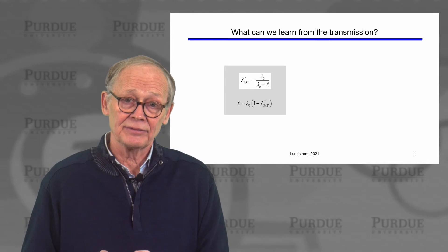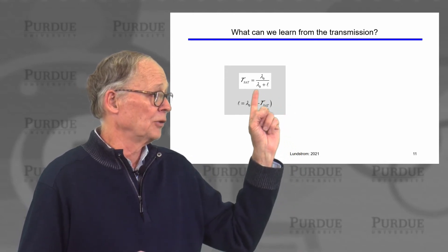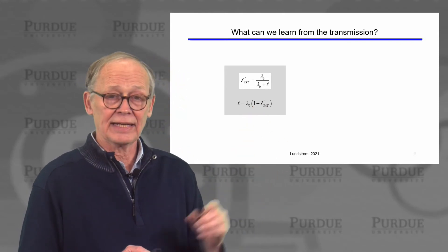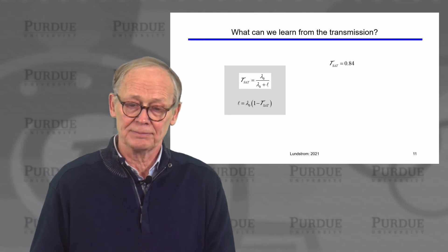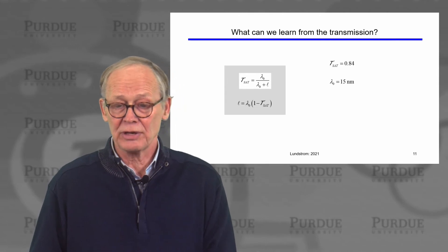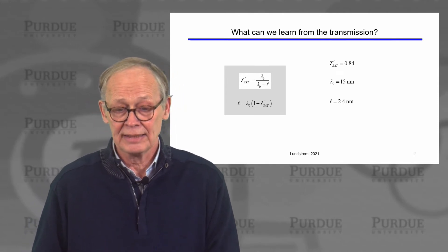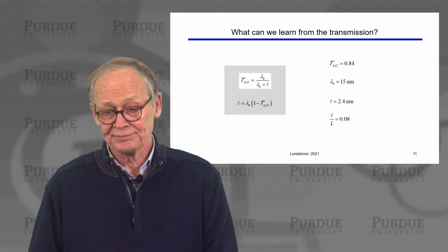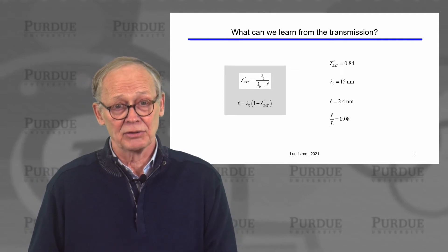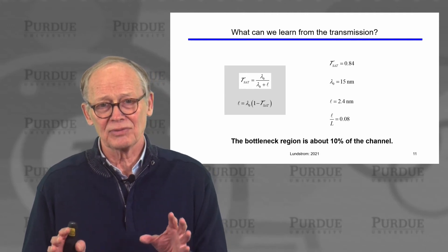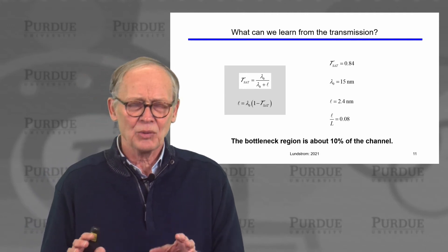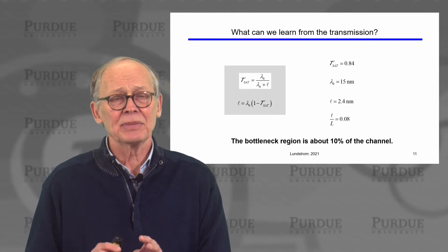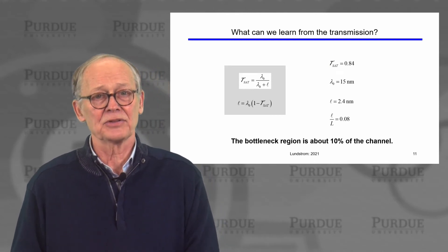We can estimate the length of that short bottleneck layer since we now know the transmission from the high VDS analysis and the mean free path from the low VDS analysis. Using the deduced transmission of 0.84 and the mean free path of 15 nanometers in the formula, we conclude that the length of the bottleneck region is 2.4 nanometers — about 8% of the channel length. The takeaway, doing this roughly with non-degenerate statistics, is that the bottleneck regime is about 10% of the 30 nanometer channel length.